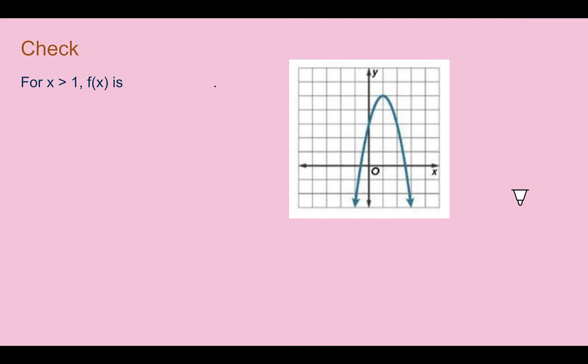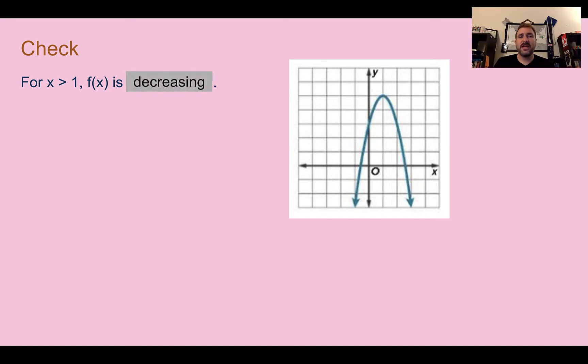Check your understanding: for x greater than 1, is f of x increasing or decreasing? Pause the video now and complete the check. Check your answer: you should have said it's decreasing. Here is when x is 1. So if x is larger than 1, that's on that side — what's happening to it? It is going down at that point. It is decreasing.